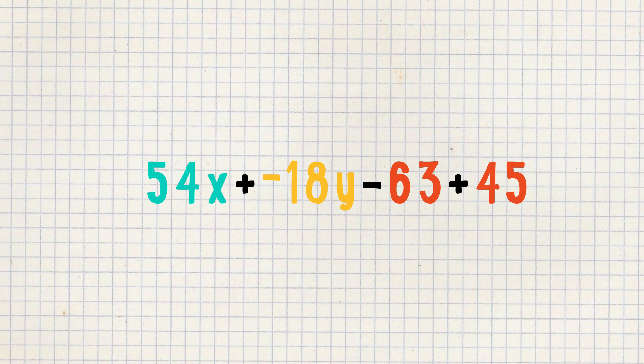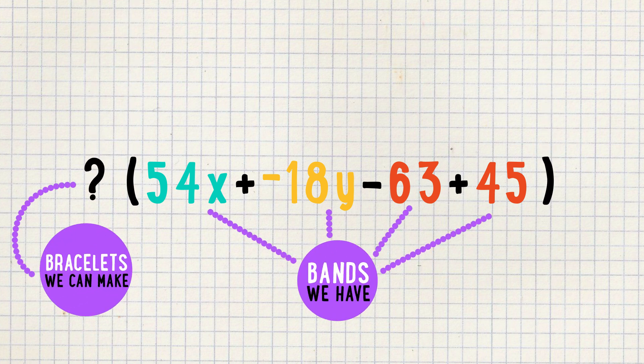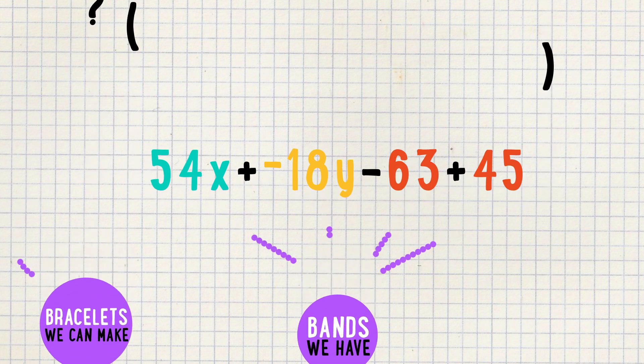This just got real! While Jasmine works on her tiny bracelets, let's use the distributive property in reverse on an expression. Say we have 54x plus negative 18y minus 63 plus 45, and we want to factor out a number. You can think of it like this box of rubber bands. We want to know how many bracelets we can make with the bands we have. But first, we have to find our common factors.